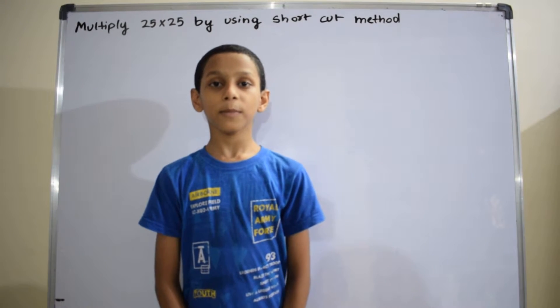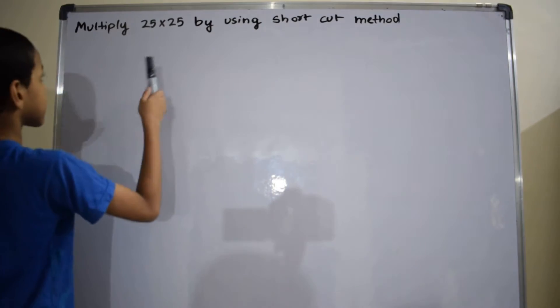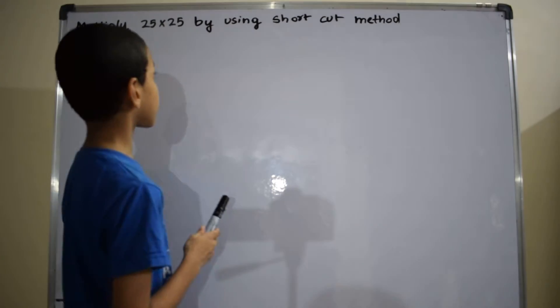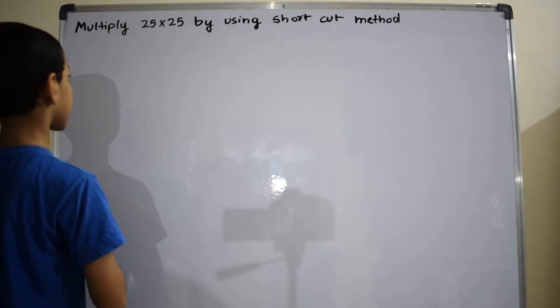Hi, I am Sai Prabhakar. Now I am explaining the concept of multiplication. Multiplication of 25 into 25 by using shortcut method. Let's start.